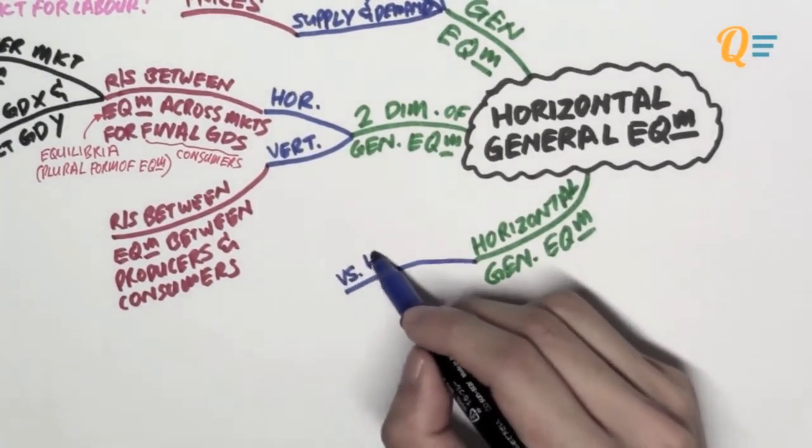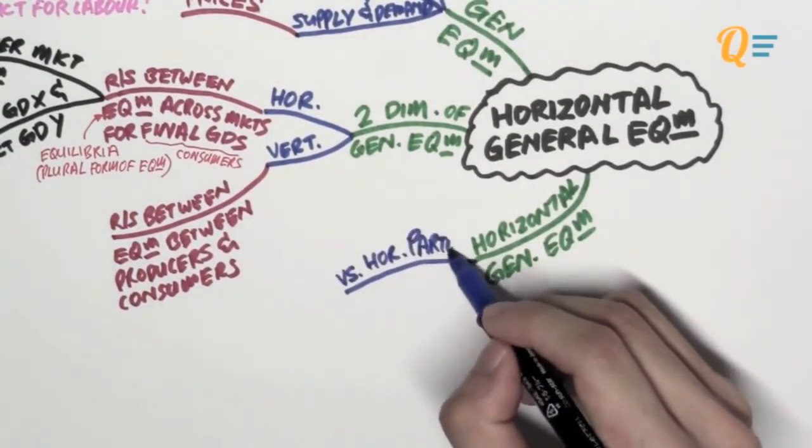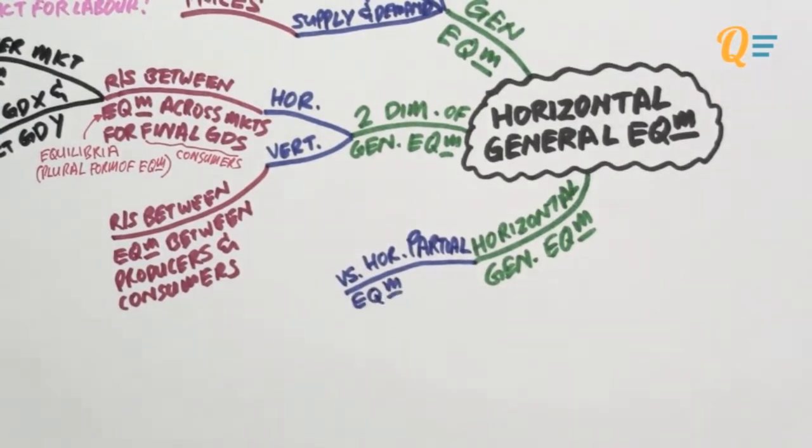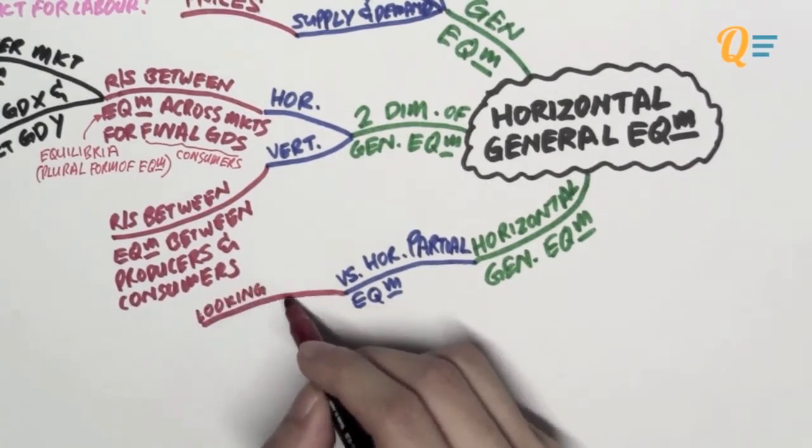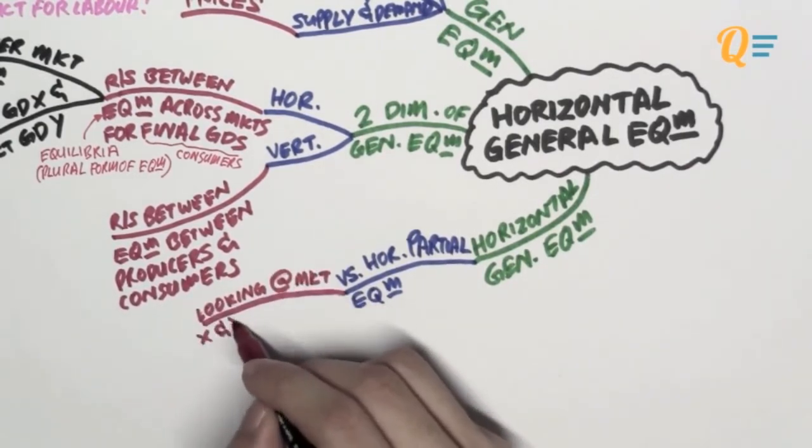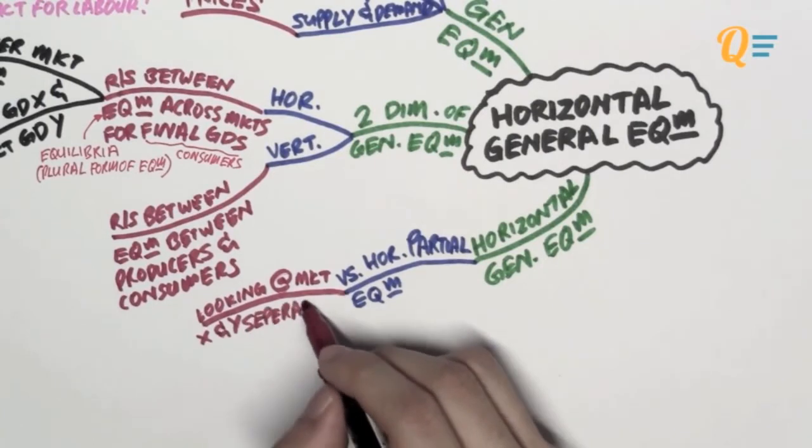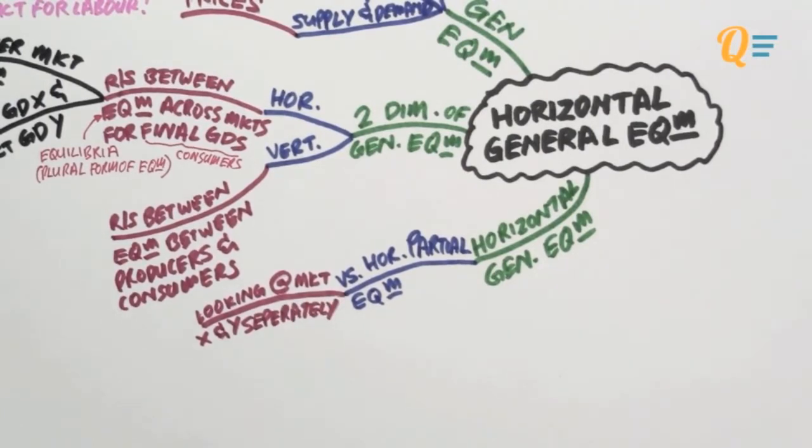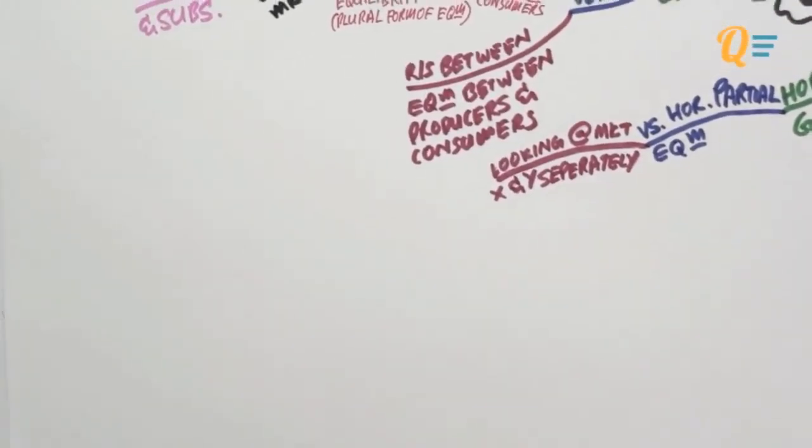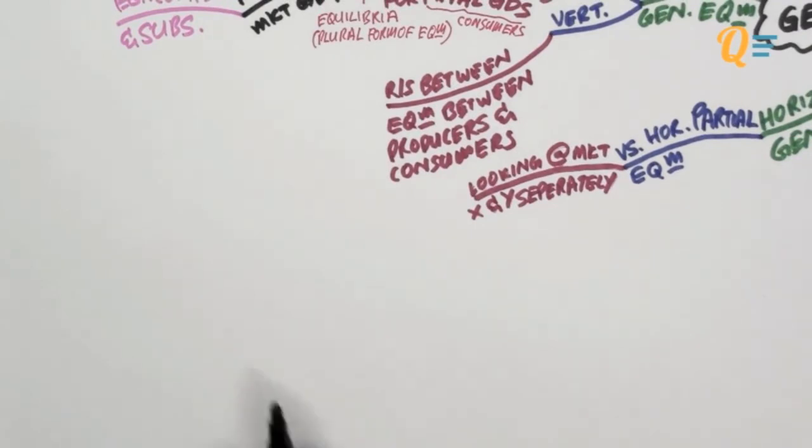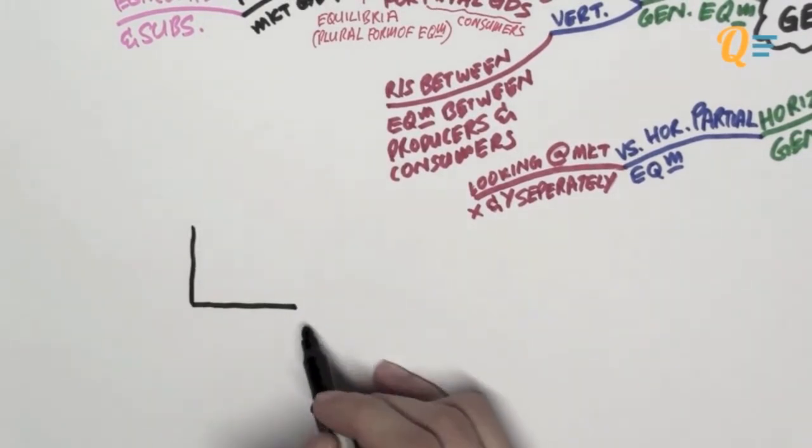Before we look into that, let's talk about horizontal partial equilibrium. Obviously, partial equilibrium will be a subset of general equilibrium. Let's look at the difference between partial and general. In partial equilibrium, you're looking at the market for good X and good Y on a separate basis. You're looking at them individually and you don't care whether these two markets are actually interacting or not, whether they have an interdependency or not.